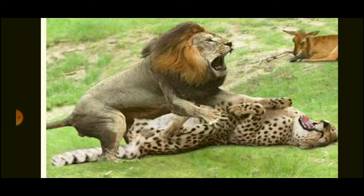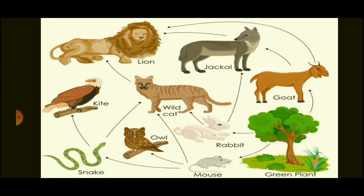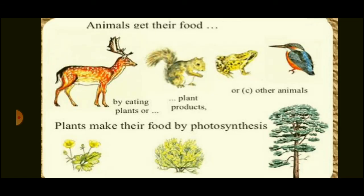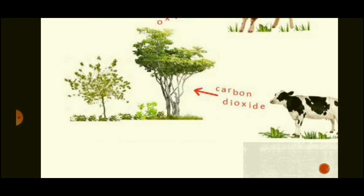Plants also depend on animals. Plants need carbon dioxide to make their food, and animals breathe out carbon dioxide. Animals take in oxygen and release carbon dioxide; plants take in that carbon dioxide for photosynthesis and release oxygen, which animals then use. If the number of plants, herbivorous animals, or carnivorous animals decreases, this balance would be disturbed.